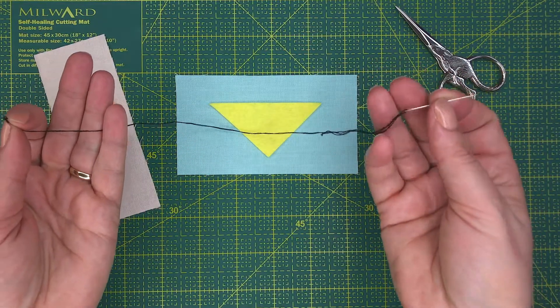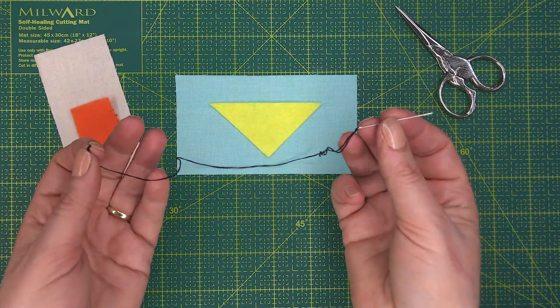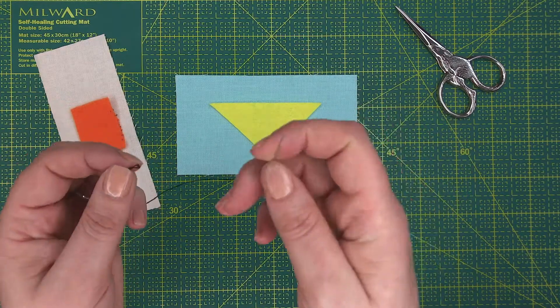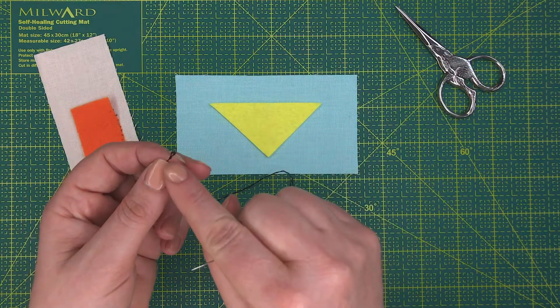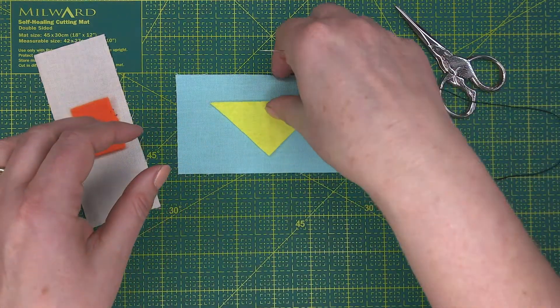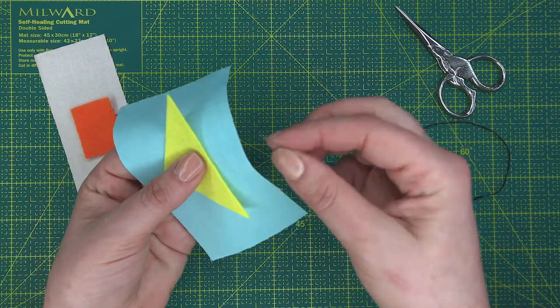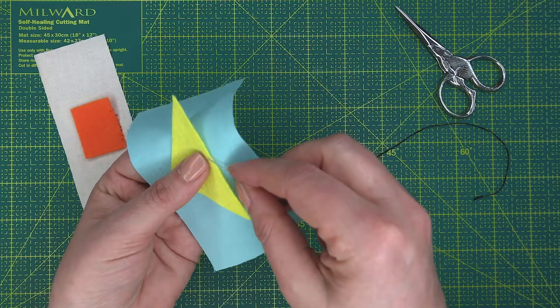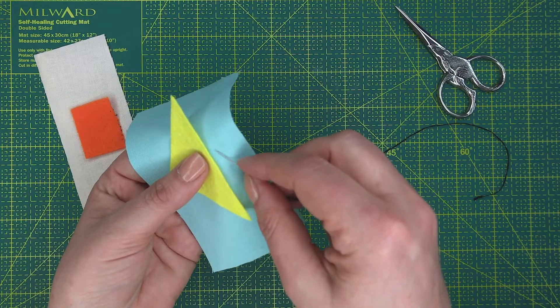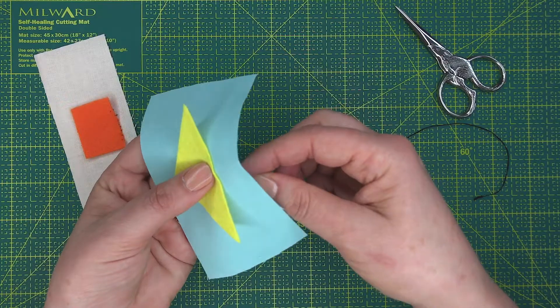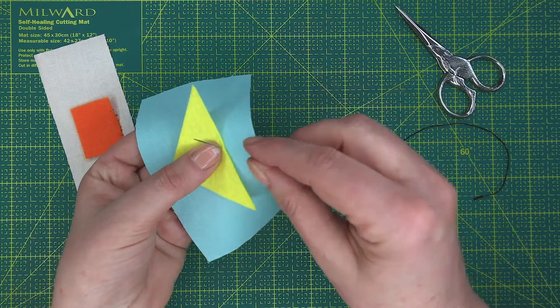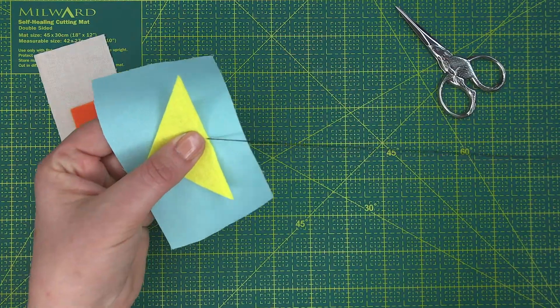That's two strands of embroidery floss, and I've put a knot at the end of it. To work this stitch, you come in from the back of the fabric, and you want to go through the two layers, so through the fabric and the felt. You pull it and make sure that the knot is embedded at the back.